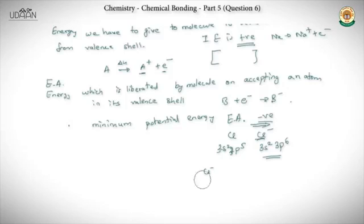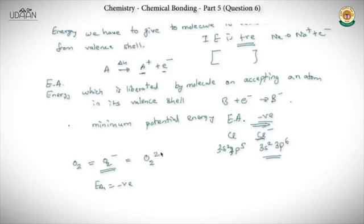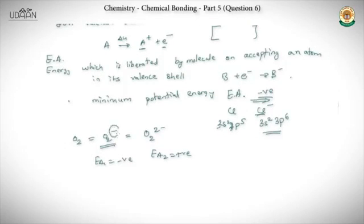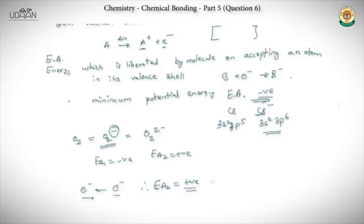For oxygen, Ea₁ is negative when it accepts the first electron. But when it accepts a second electron, Ea₂ is positive. The basic reason is there is already one electron existing in its outer shell, so that electron repels the incoming electron. Therefore Ea₂ is positive — meaning we have to supply energy for it to accept a second electron.